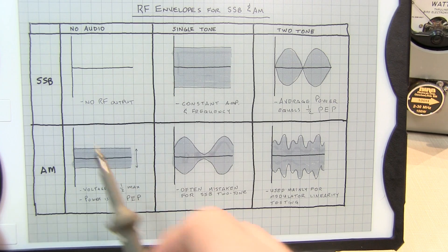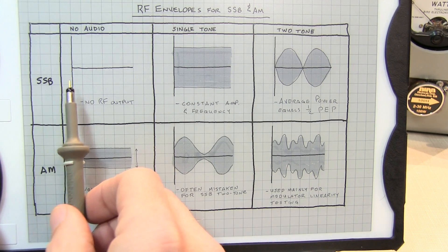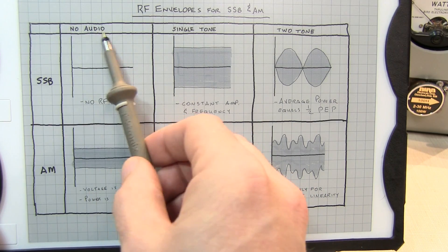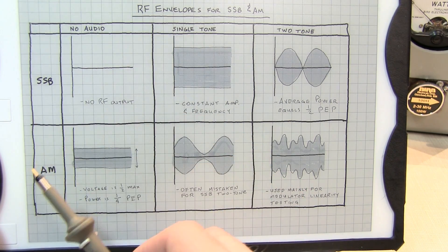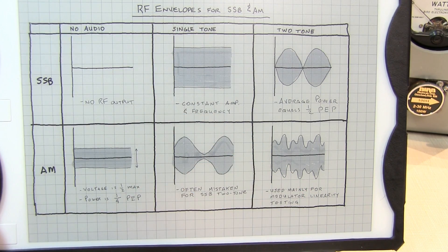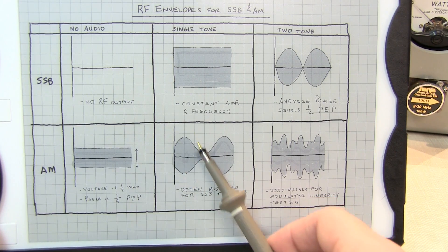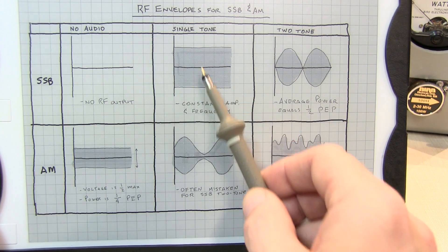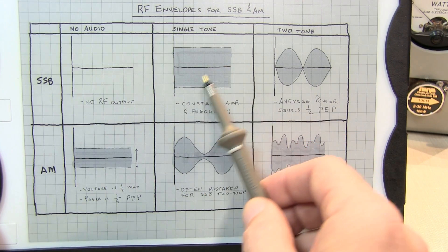Let's compare this to single sideband. Single sideband eliminates the carrier and one of the sidebands from the RF signal. So with no audio input, there is no output. That's just a property of single sideband. If we put in that same single tone that we did in the AM case, on single sideband, that's going to look like a constant amplitude, constant frequency RF envelope.